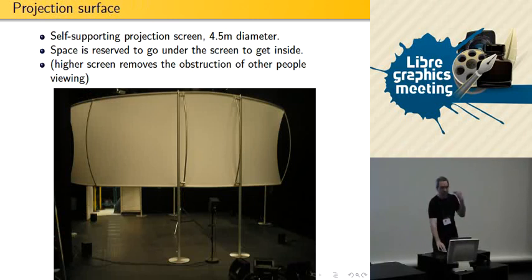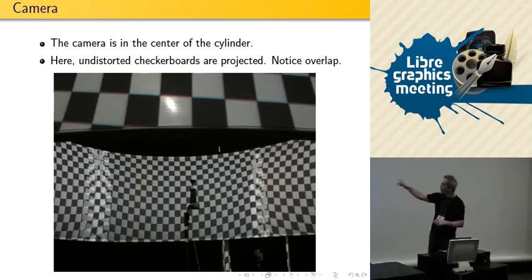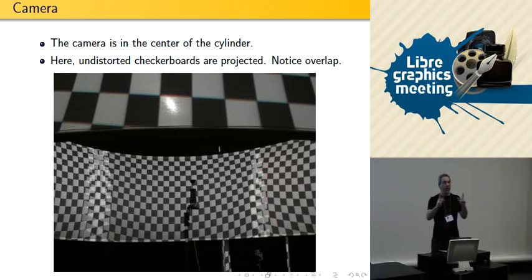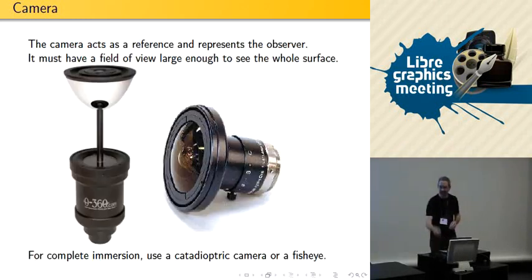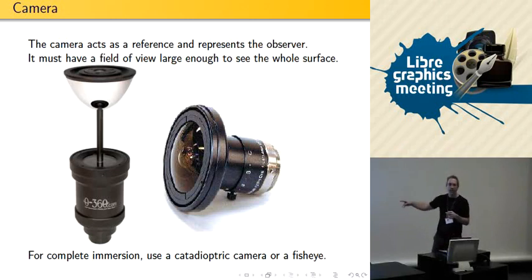That's basically how it's going to look — it looks better in space. Now, if you project grids, you can see that each grid is very distorted and there's overlap. Overlap is very important because it allows you to blend things together nicely. The camera should be fitted with a fisheye or a catadioptric lens — some mirror lens — whatever is usable to see the whole screen.